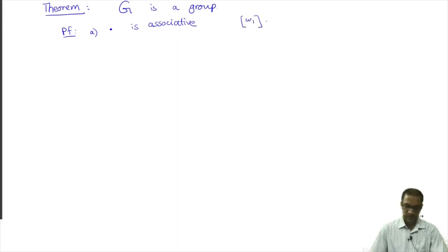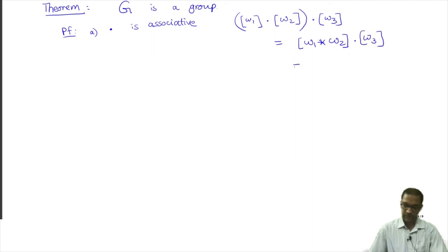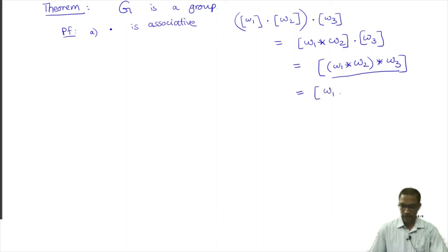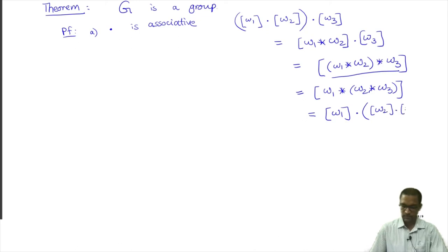Observe: the definition says if I take W1 multiplied by W2. Let us just write out the definition of associativity. This by definition is the equivalence class of W1 star W2, multiplied by the equivalence class of W3, which by definition again is the equivalence class of W1 star W2 star W3. Observe that what is inside the representative of the class is just the concatenation of these three. I can replace this triple with W1 star W2 star W3, and that by the definition of multiplication in G will become this product — that is exactly the verification of associativity.